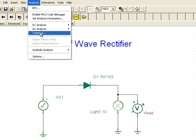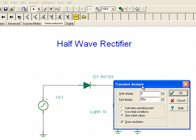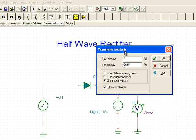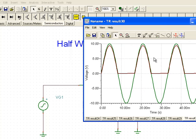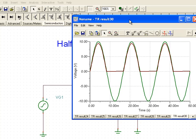So I'll go to analysis, I'll select transient. We know that we have a 60 Hz input, so one cycle is 1/60th of a second, or 16.6 milliseconds. So 0 to 50 milliseconds should give me about 3 cycles of the output waveform. We'll select 0 initial values, and here's our output waveform.